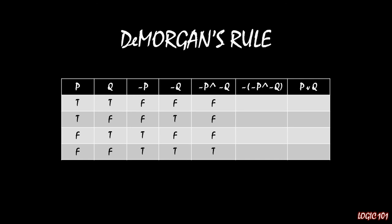For the sixth column, we negate the fifth column — so we have not (not p and not q). We take the fifth column and flip the F's with the T's, giving us true, true, true, false: true in the first three rows and false in the fourth row.